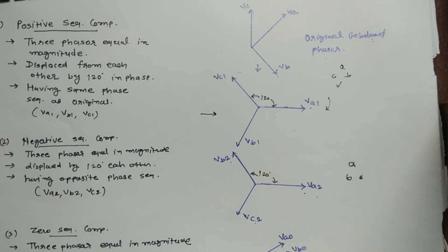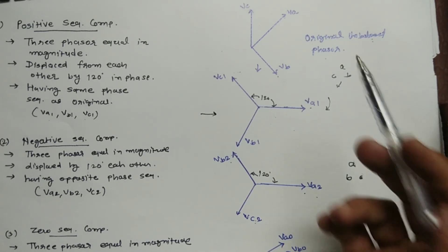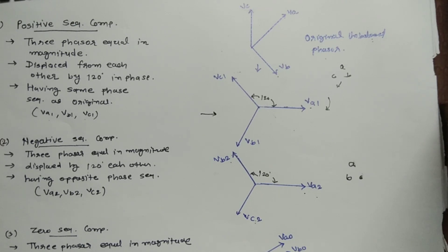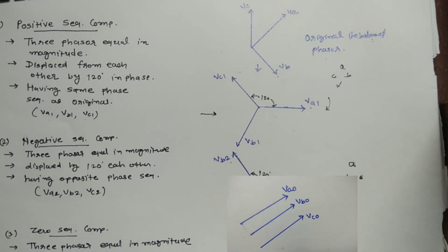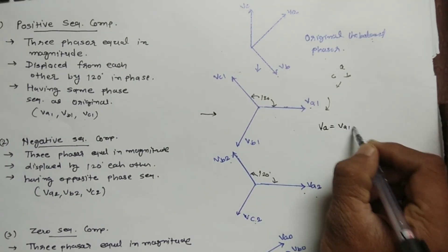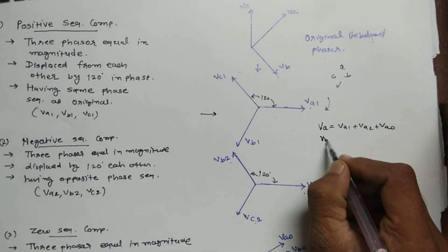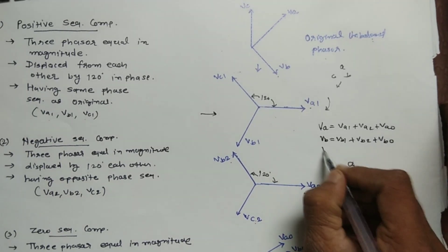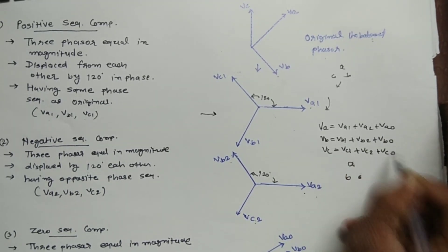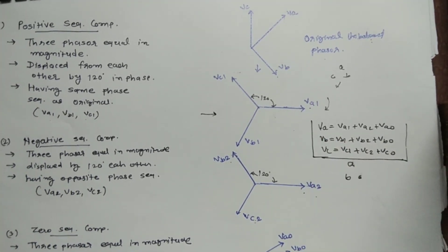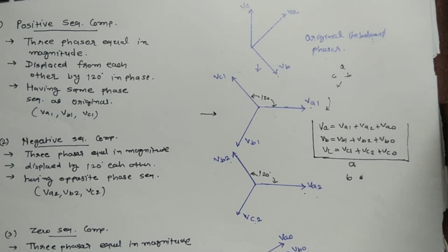The symmetrical component contains three components: positive, negative, and zero sequence components. In the positive sequence component, all phase magnitudes are equal, displaced by 120 degrees, and the phase sequence is the same as the original unbalanced phasor. In the negative sequence component, magnitude is equal and displacement is 120 degrees, but the phase sequence is opposite to the original. In the zero sequence component, the magnitude is equal but the phase displacement is zero. So the unbalanced phasor VA equals VA1 plus VA2 plus VA0, VB equals VB1 plus VB2 plus VB0, and VC equals VC1 plus VC2 plus VC0. In the next video, we will derive symmetrical components from unbalanced phasors and work through an example.